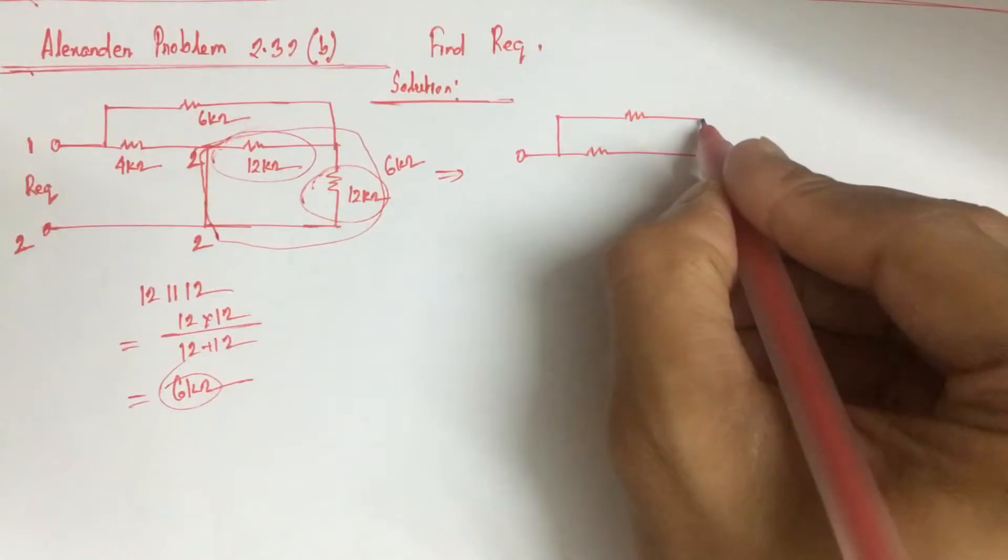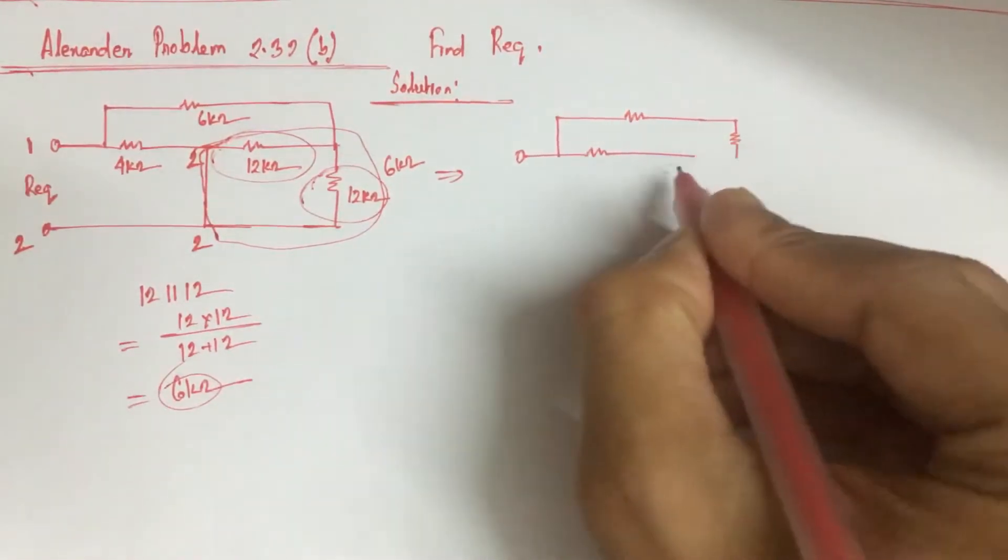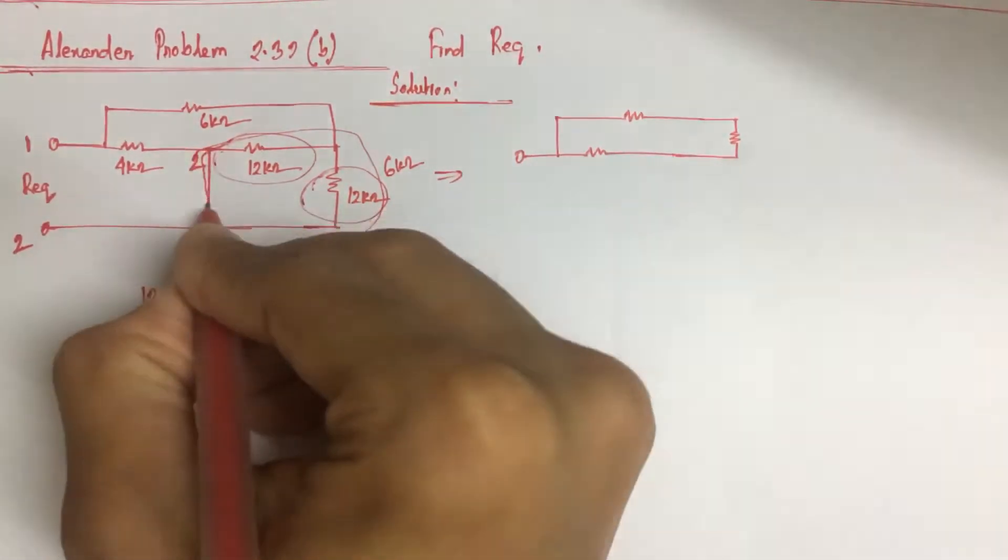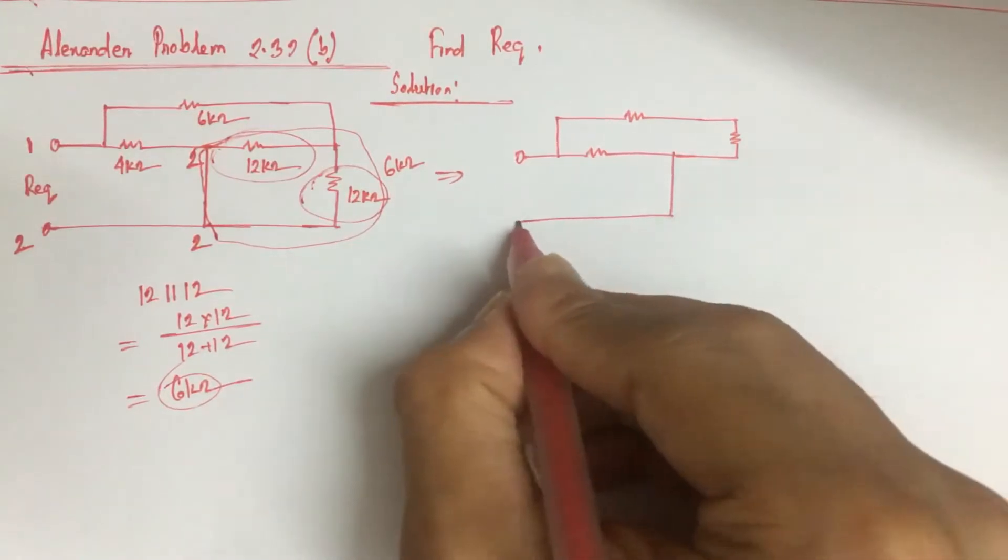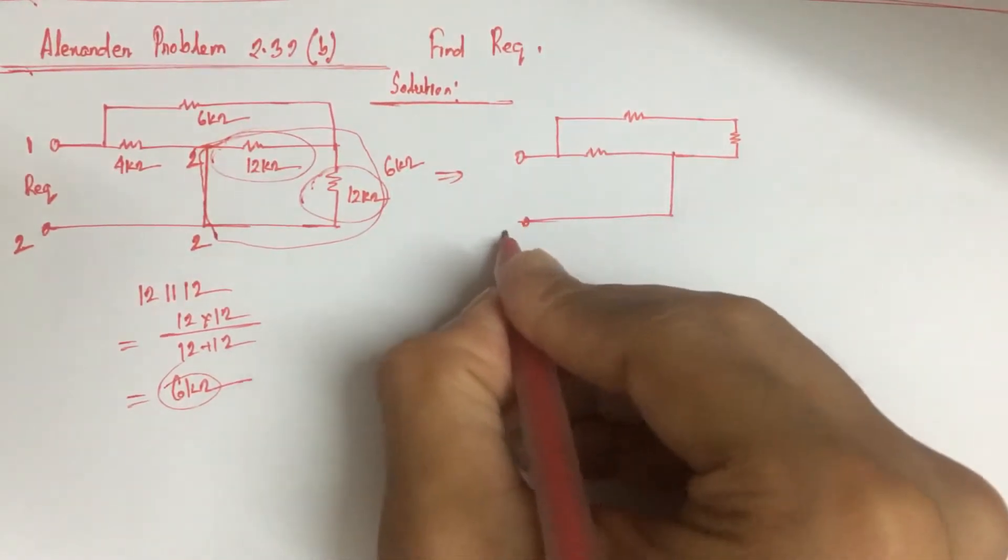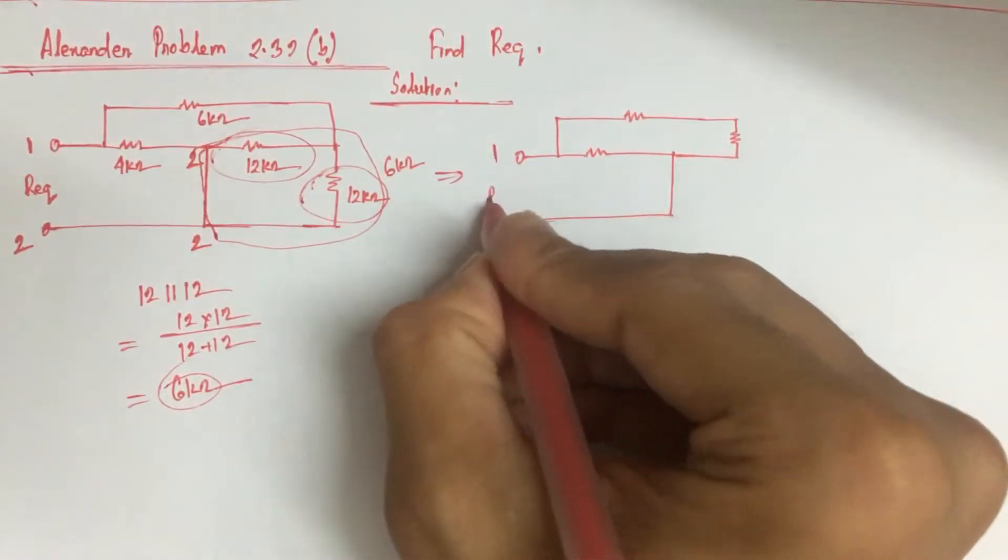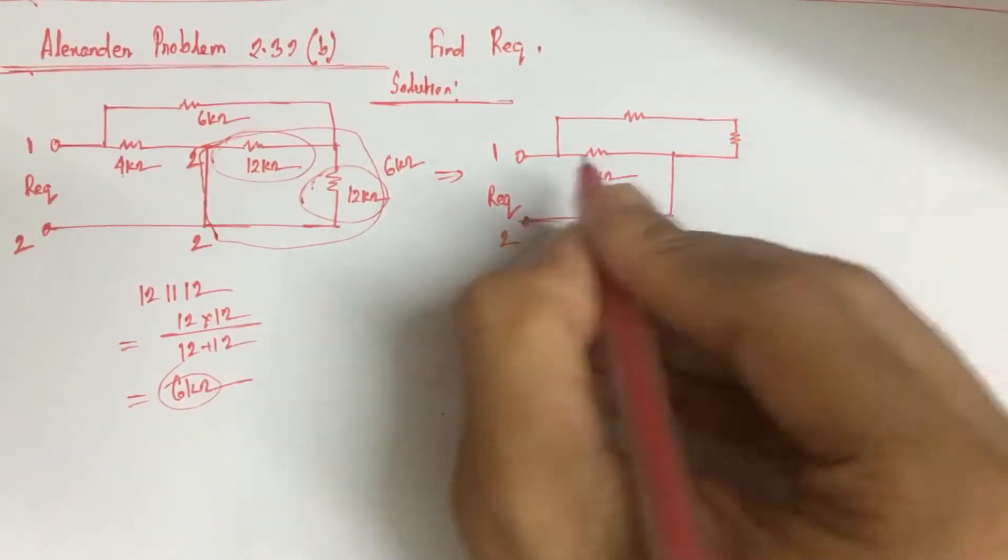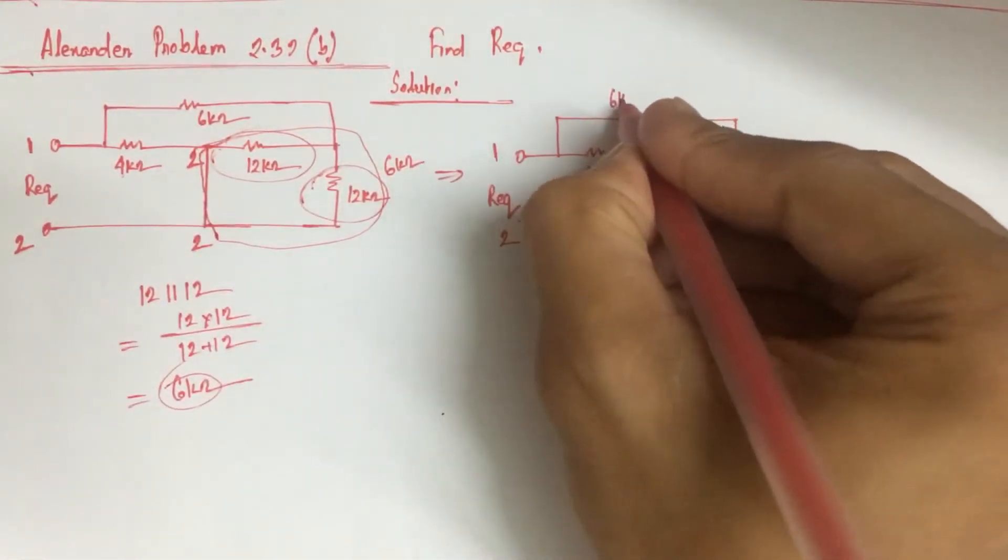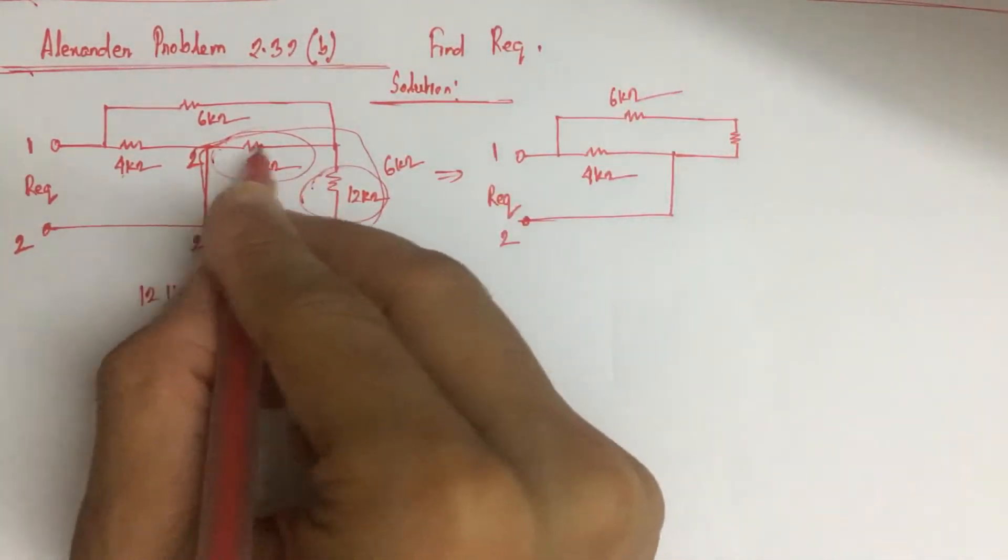This is the same point, point 2. This is point 2, this is point 1, and we have to identify our equivalent. This is 4 kohm, this is 4 kohm, this is 6 kohm as previous.